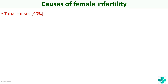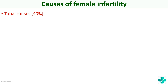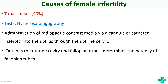The investigation for tubal causes is called hysterosalpingography (HSG). 'Hystero' means uterus and 'salpinx' means fallopian tubes. In this procedure, a catheter containing contrast medium is inserted and the contrast dye is pushed into the uterus. If the fallopian tube is patent, the dye will travel through it; if it is blocked, the dye cannot move. On X-ray you can see a picture showing both the patent tube and the blocked tube.